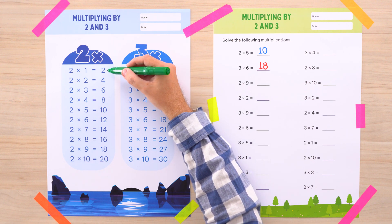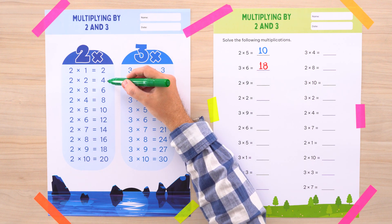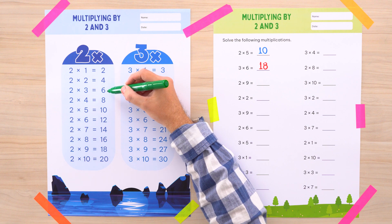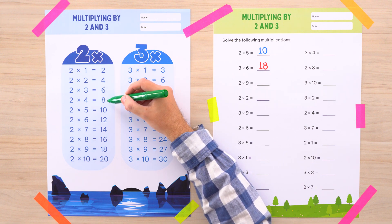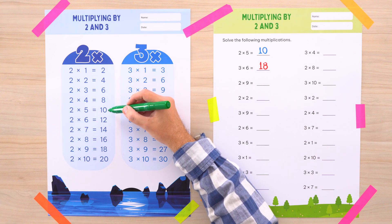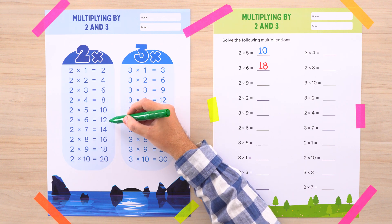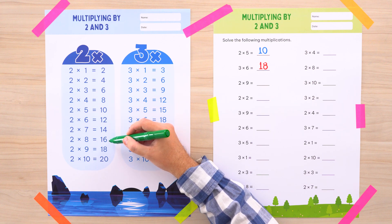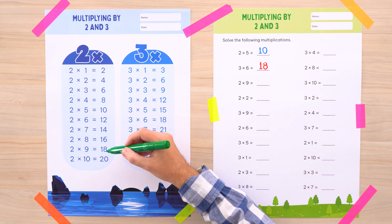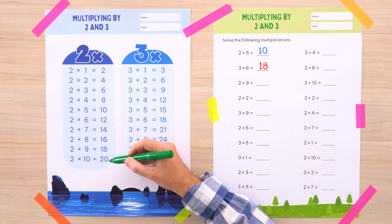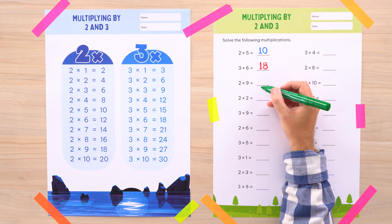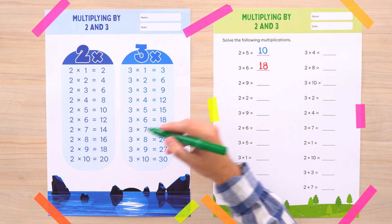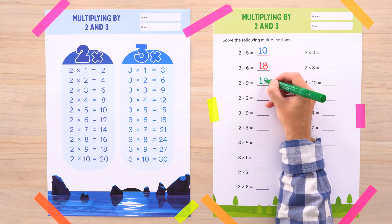Here we have: 2 times 1 is 2, 2 times 2 is 4, 2 times 3 equals 6, and 2 times 4 equals 8, 2 times 5 equals 10 and 2 times 6 equals 12, 2 times 7 equals 14 and 2 times 8 is equal to 16, 2 times 9 equals 18, and finally 2 times 10 gives us 20. So 2 times 9 is 18.